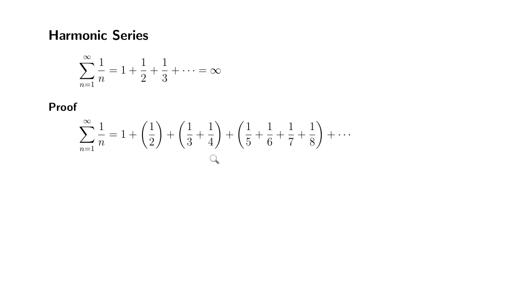So you can see that we're going to replace everyone else by the last term in each group. So it's going to look something like this. This sum is going to be definitely smaller than the original sum, because we're replacing terms by smaller terms.